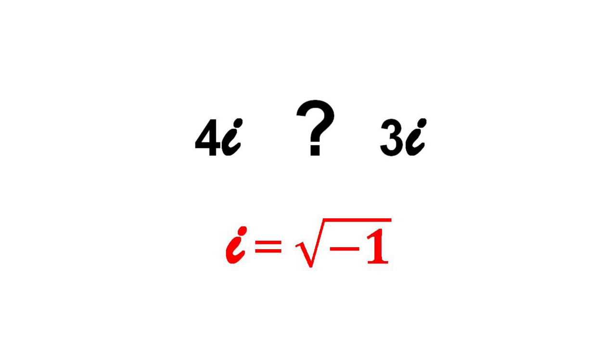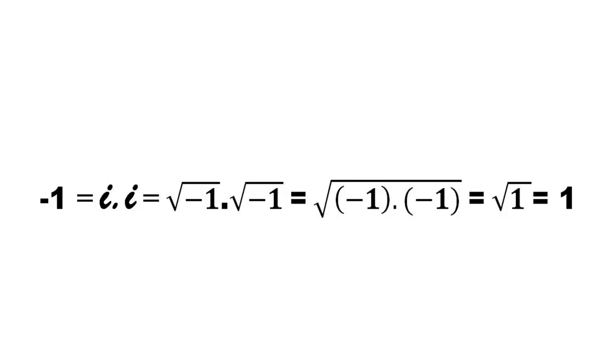One more funny example that I can give you is that it is possible to prove 1 equals minus 1, if you apply the theory of complex numbers. And it's really entertaining. This clearly shows that the concept of complex numbers or imaginary numbers is completely wrong. It is a fake mathematics.